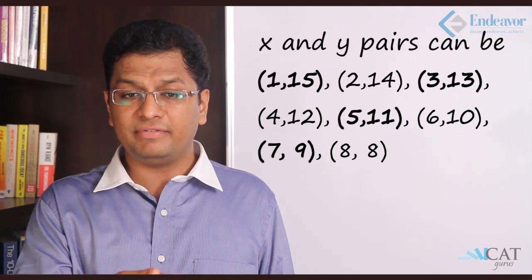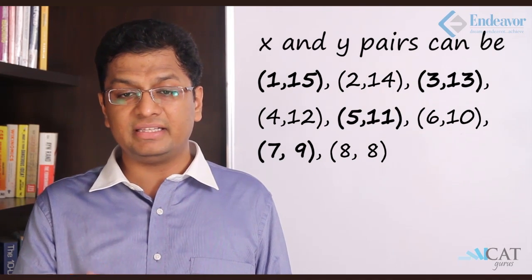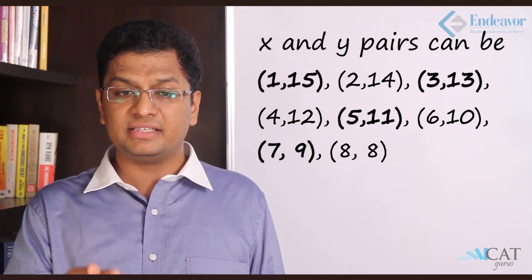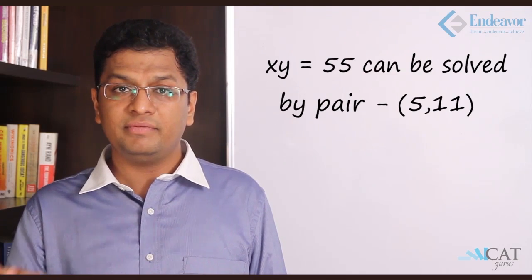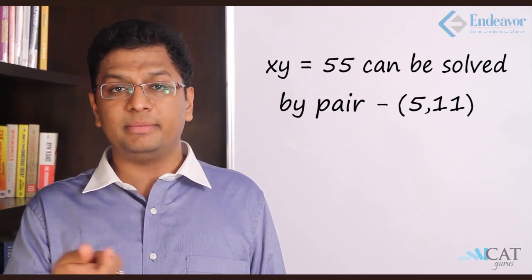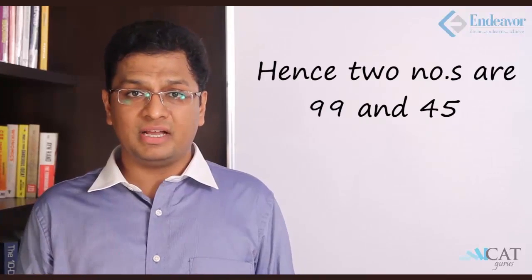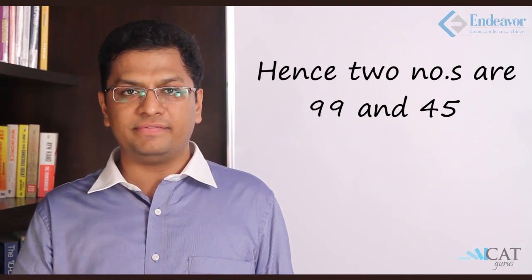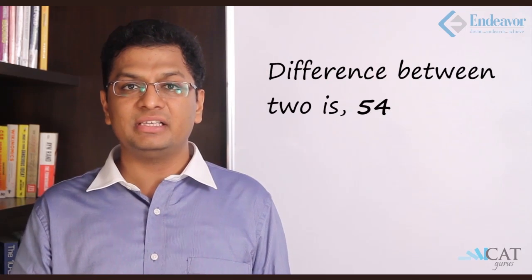So here it will be only 1, 15; 3, 13; 5, 11; and 7, 9. Now which of these is solving the other equation which is x into y is 55? We see that 11 and 5 are only able to solve this. Hence the two numbers are 11 into 9 and 5 into 9. So it is 99 and 45. But we are asked the difference of the two numbers. So the difference of the two numbers is 54.